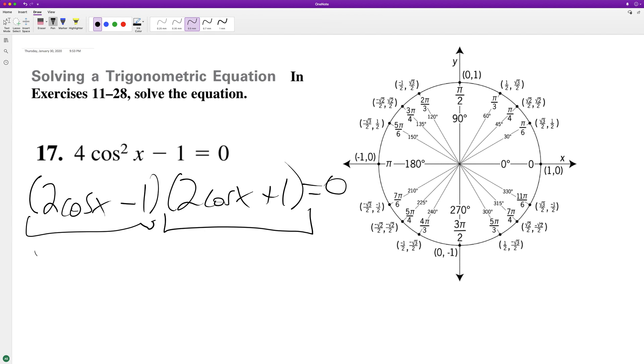So starting off here, this would be the same thing as cosine of X is equal to one half. I added one to the right side and I divided by two. Cosine is equal to one half at pi over three and five pi over three.